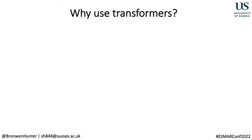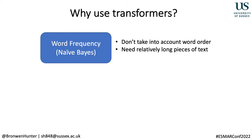To illustrate why we might want to use these more complex transformer-based models, it's first useful to think about some of the pitfalls of the other models. Some of the simplest text classification models, such as naive Bayes, look only at word frequency to make a decision about the topic or sentiment of text. Whilst this can work quite well for longer texts and has been successfully applied to some evidence syntheses, because word order isn't taken into account, these methods often fall down for shorter pieces of text — and in evidence syntheses we often only have the title or abstract of a paper.